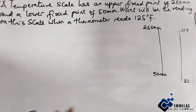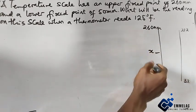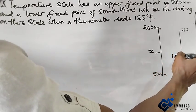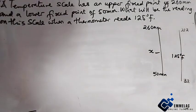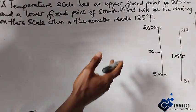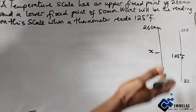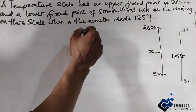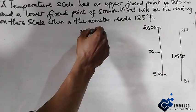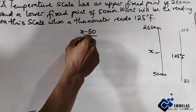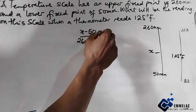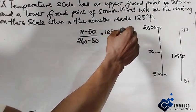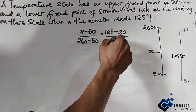We are told what will be the reading on this scale if the Fahrenheit scale reads 125 degree Fahrenheit. By using the proportional ratio, we have (x minus 50) over (260 minus 50) equals (125 minus 32) over (212 minus 32).